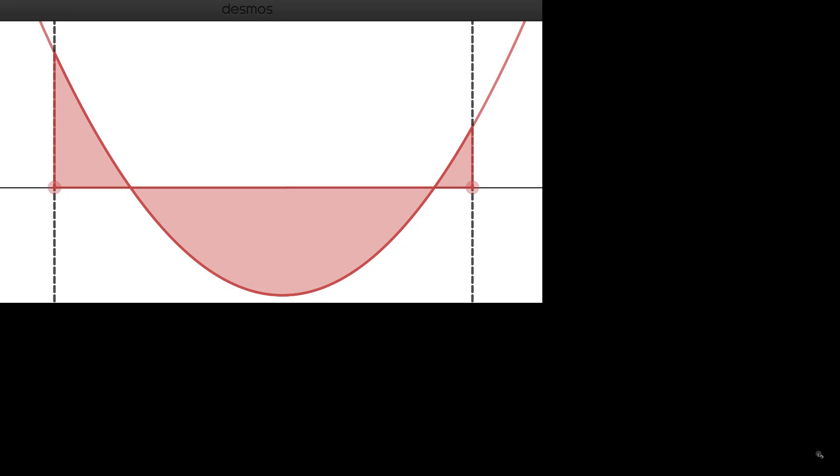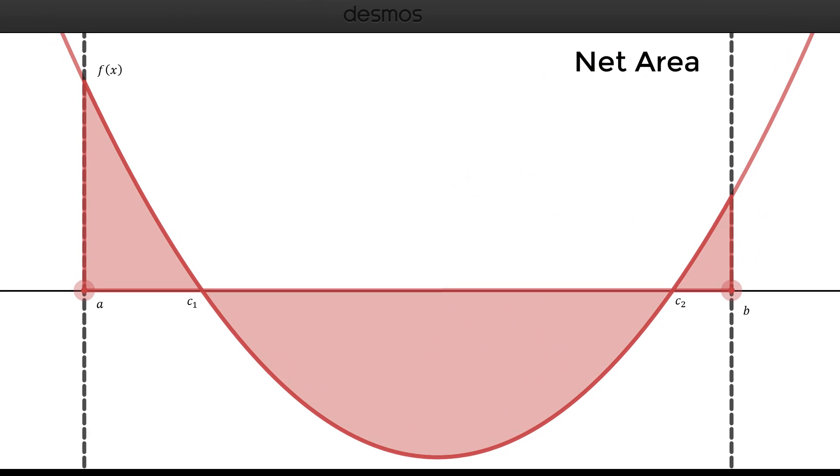Check out this graph with the region between the curve and the x-axis shaded. The area under the x-axis is considered a negative region, and the area above the x-axis is considered a positive region.